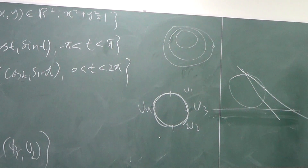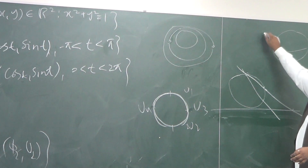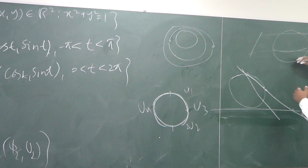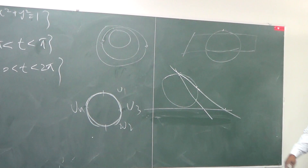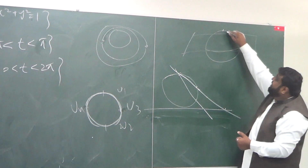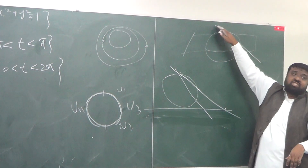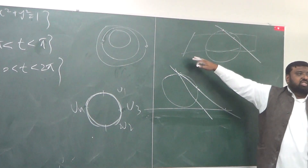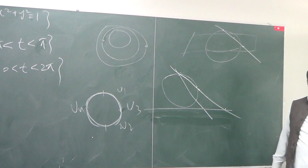In the case of three dimensions, imagine this is the xy-plane cutting the sphere from the middle. This is the north pole — or south pole, whichever you want. Take any point on the sphere, join them, and wherever this extended line hits the plane — wherever it intersects — that point is the projection of the point on the sphere onto the plane. That's how the map is made.